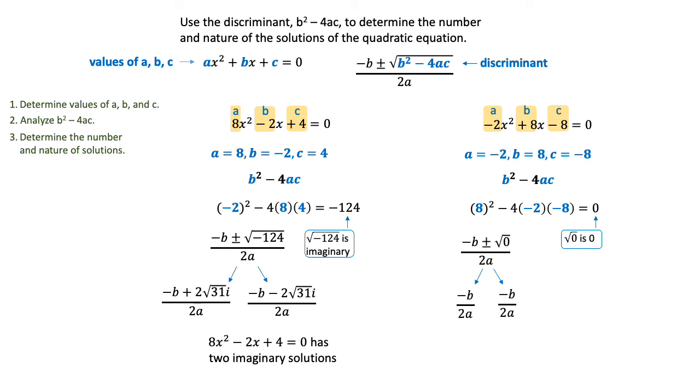When you plug that in for the discriminant and add and subtract, it won't make any difference. It just goes away. You'll end up with two identical answers, which we call one repeated real solution. That's the fourth example of what might happen with the discriminant.